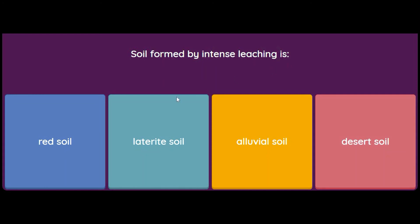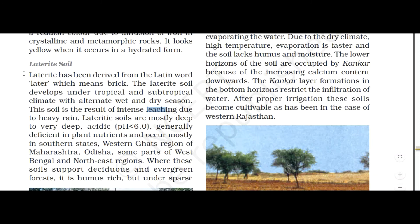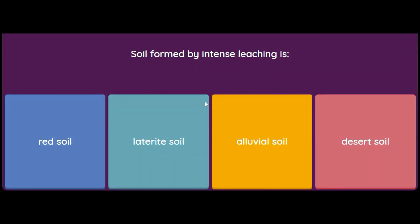Soil formed by intense leaching is: red soil, laterite soil, alluvial soil, or desert soil? The answer is laterite soil. Remember: red soil is due to diffusion of iron; alluvial soil is made by river sand, silt and clay. Laterite has been derived from the Latin word 'later' meaning brick. It develops under tropical and sub-tropical climate with alternate wet and dry seasons, and is the result of intense leaching due to heavy rain.